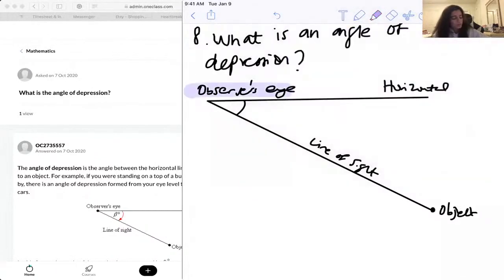So that is the observer's eye, the horizontal, the line of sight, and the object.